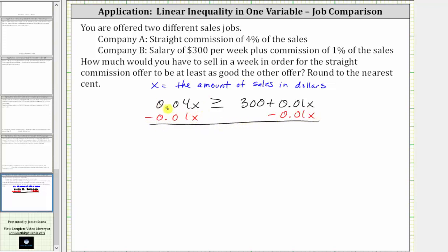Simplifying, 0.04x minus 0.01x is equal to 0.03x, which must be greater than or equal to—on the right side, 0.01x minus 0.01x is 0. The right side simplifies to 300.